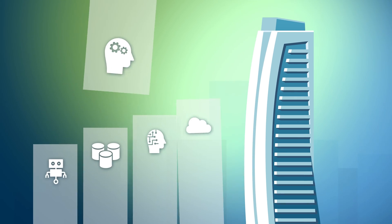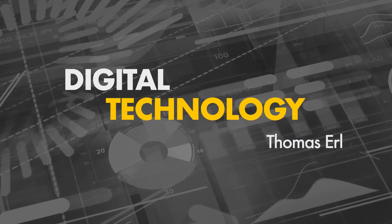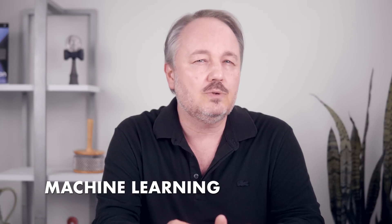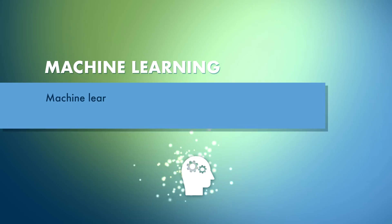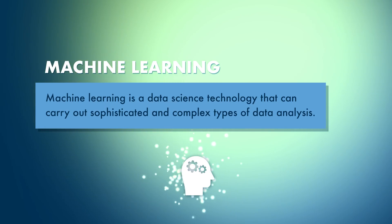What is machine learning and how is it used in a digital business solution? Machine learning is part of data science. It introduces very powerful tools and technology that can carry out sophisticated and complex types of data analysis and can often do so instantly. As the name machine learning indicates, what's really important about this type of data science technology is that it can actually learn.